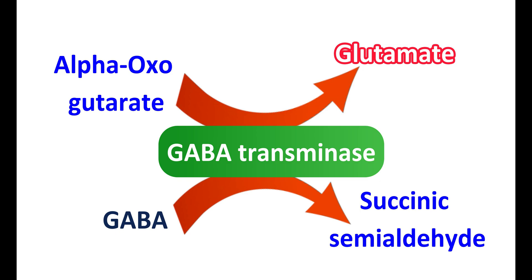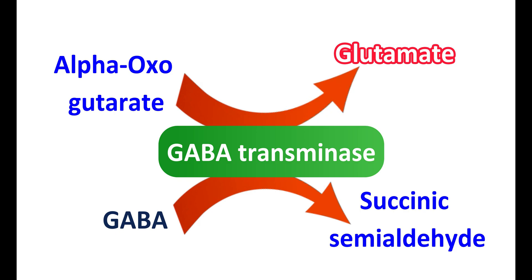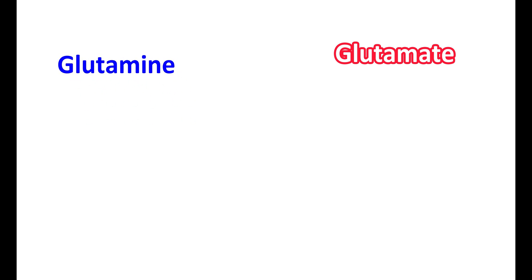Here we can clearly observe that while glutamate is synthesized, GABA is metabolized. Glutamate is an excitatory neurotransmitter whereas GABA is an inhibitory neurotransmitter within the CNS. This means when an excitatory neurotransmitter is synthesized, an inhibitory neurotransmitter is metabolized — there is a balance between excitatory and inhibitory neurotransmitters within the CNS.